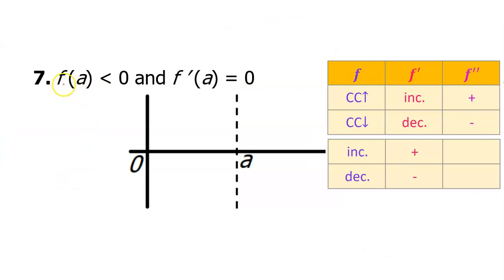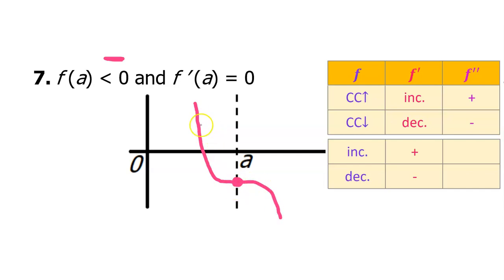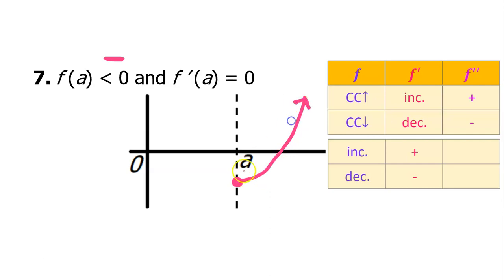For number seven, the value of the function at a is less than zero — f at a will be negative, so let's put a closed circle below the axis. f prime at a is equal to zero, so the slope of the function here must be zero. We could flatten the graph out at a, making it an inflection point where the slope right there is zero. Or we could just make a simpler graph like a parabola where the tangent line is horizontal at a with a slope of zero, so the derivative is equal to zero.